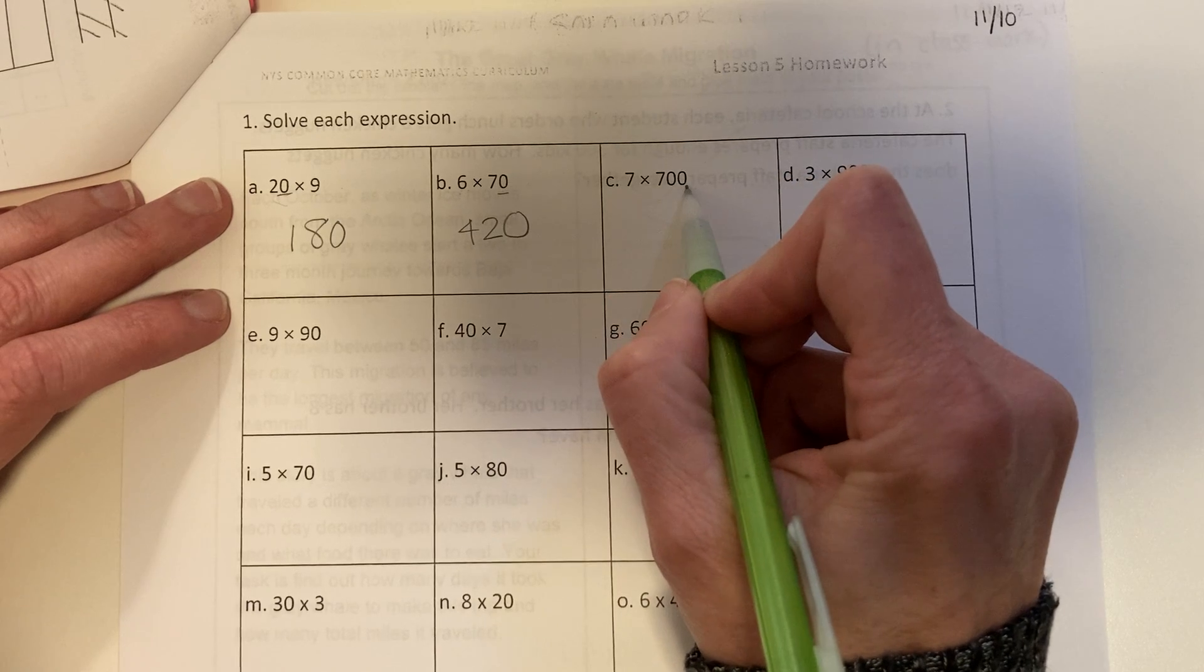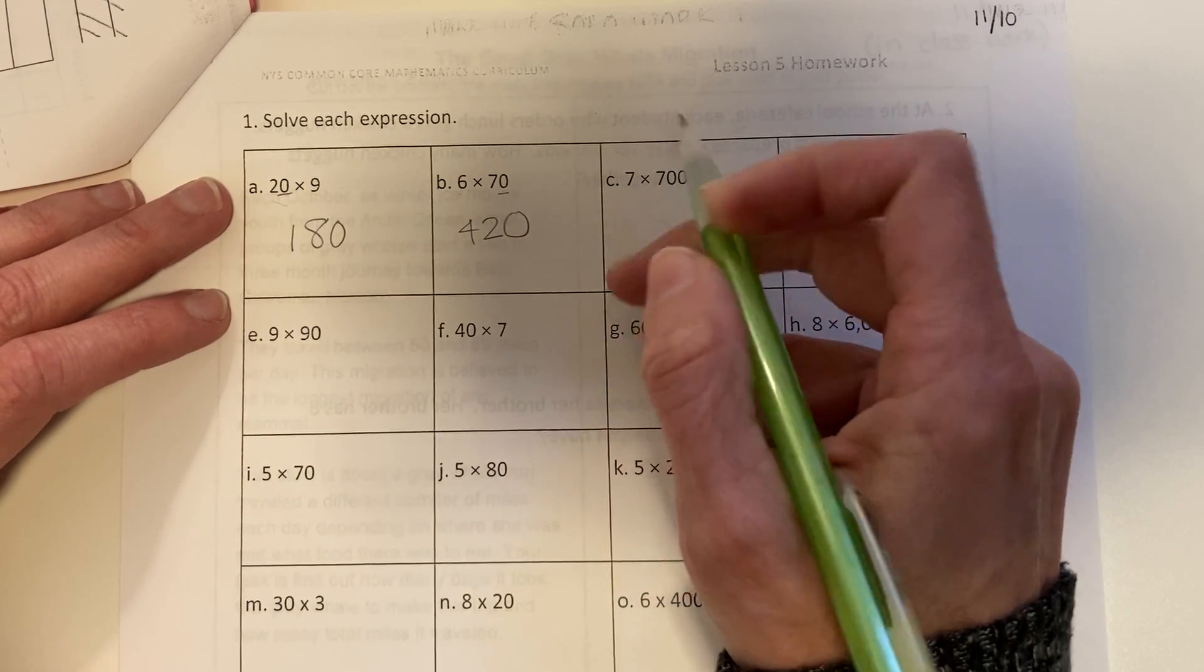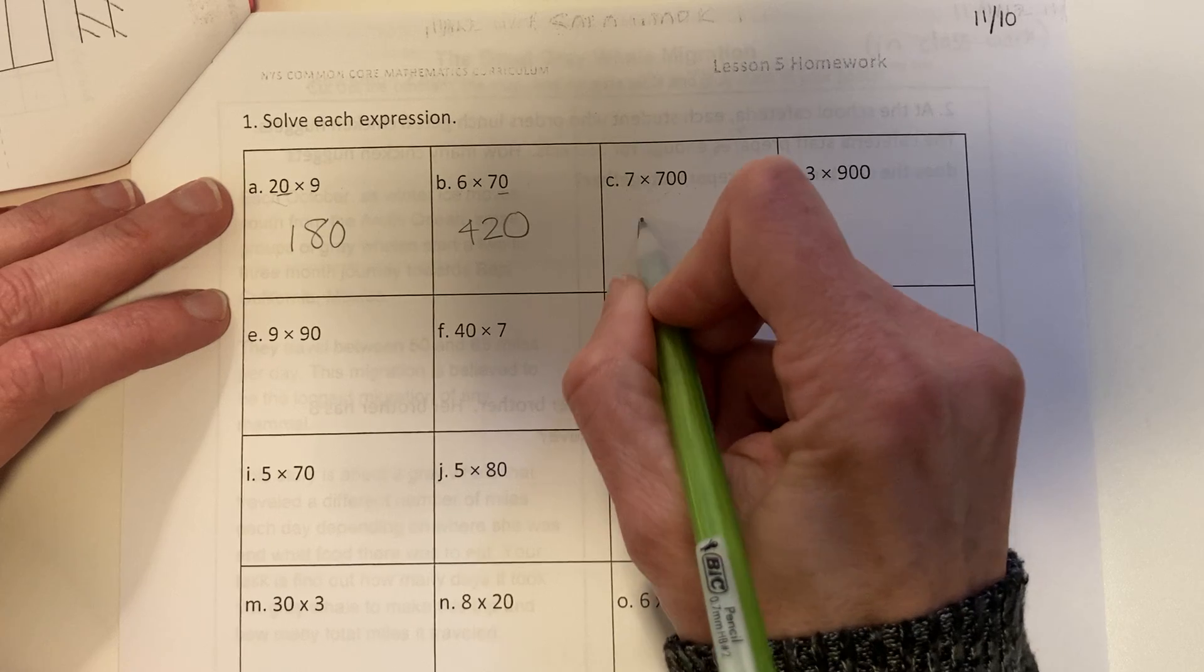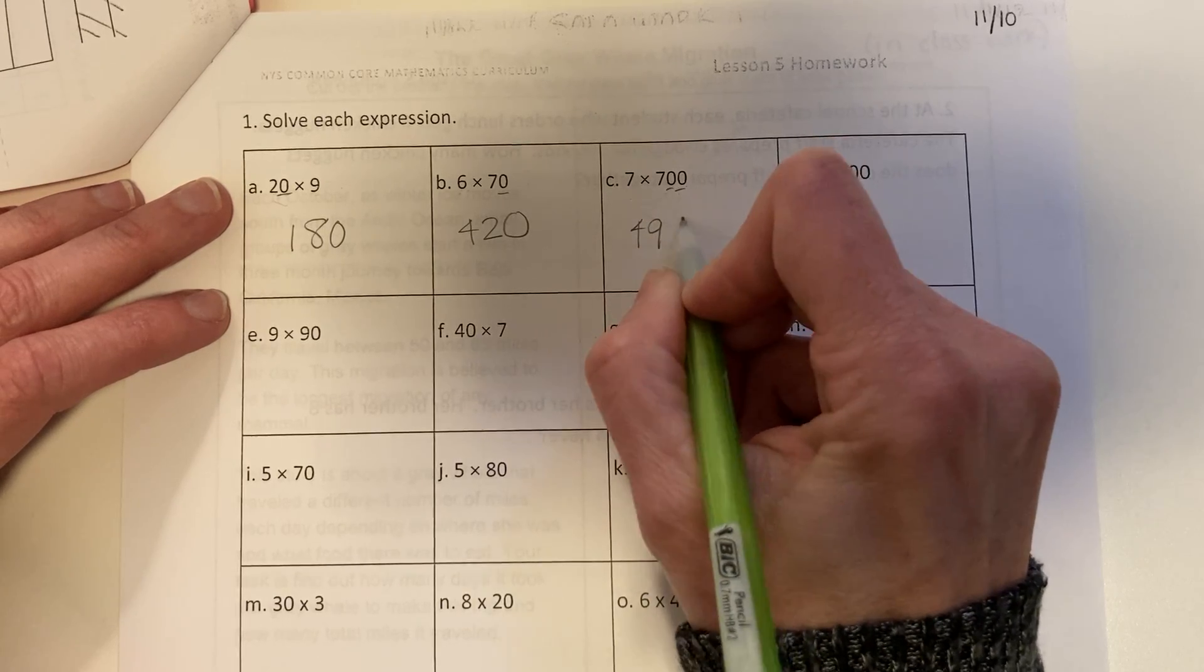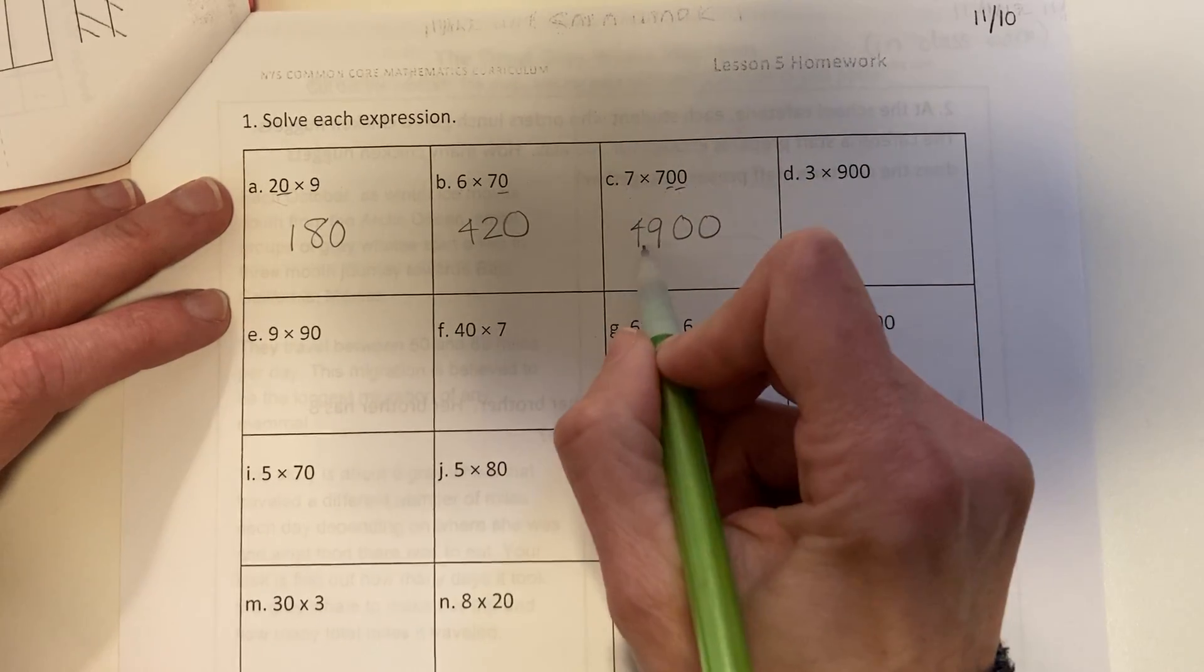7 times 700 is the same as 7 times 7 times 100. I can do 7 times 7, which is 49, times 100. We'll add two zeros and a comma.